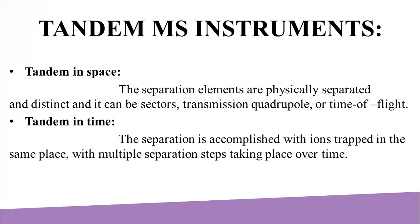In tandem in time, separation is accomplished with ions trapped in the same place, with multiple separation steps taking place over time. A quadrupole ion trap or FTMS instrument can be used for such analysis. Trapping instruments can perform multiple steps of analysis, sometimes referred to as MS^N.